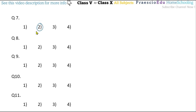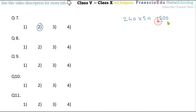Question number eight: How many rupees 20 notes are equal to 240 coins of rupees 5? So 240 multiplied by 5 equals 1,200 rupees. Divided by 20 equals 60. So 60 notes of rupees 20 are equal to 240 coins of rupees 5. This is given in option number three.